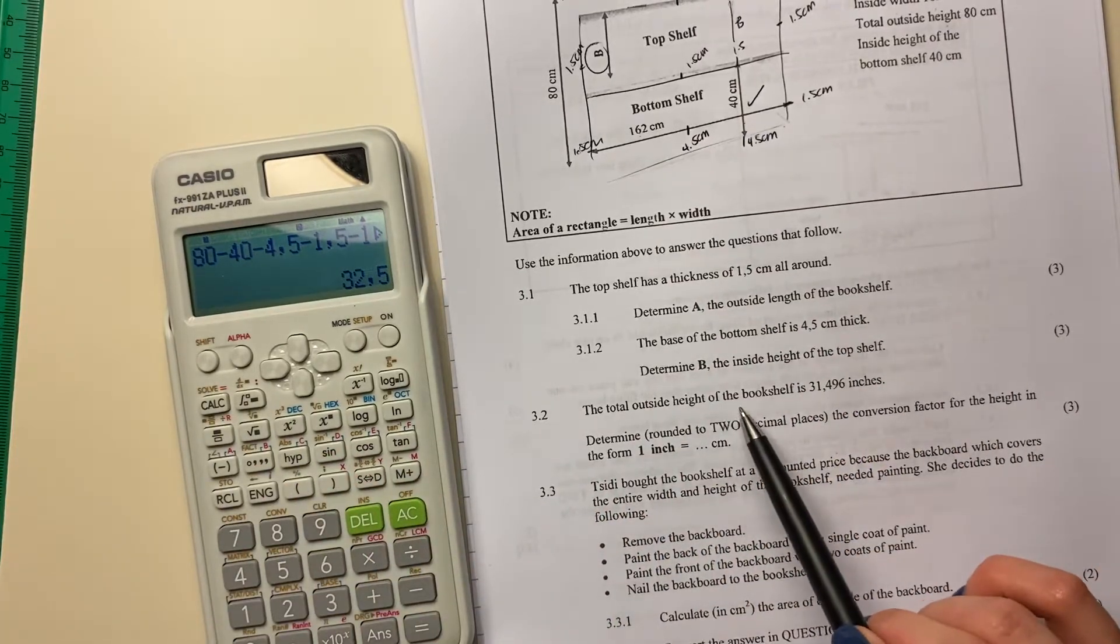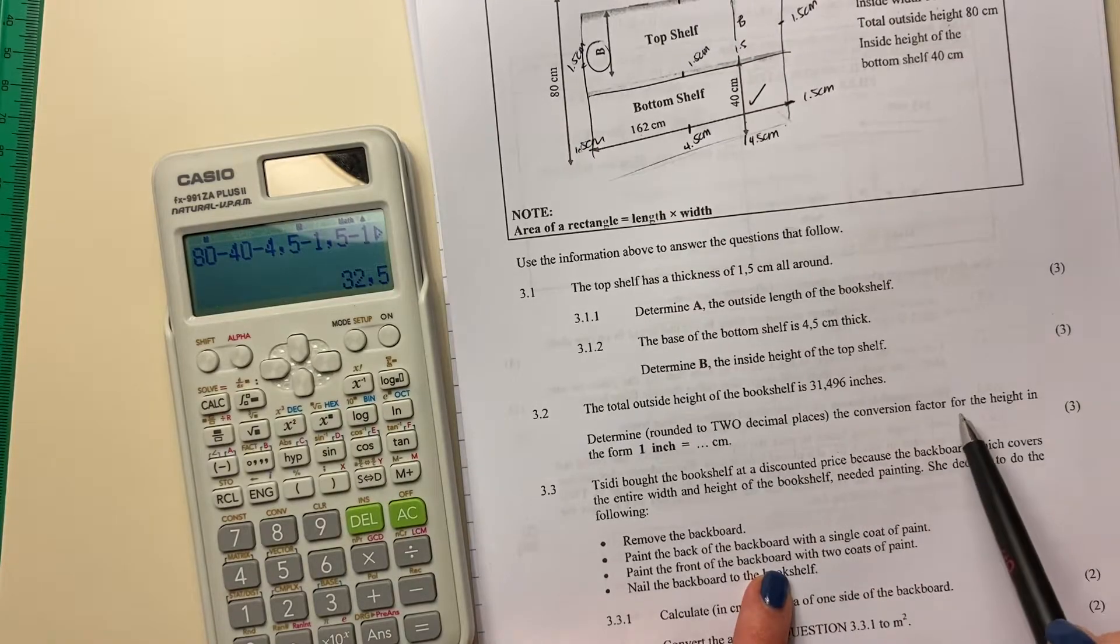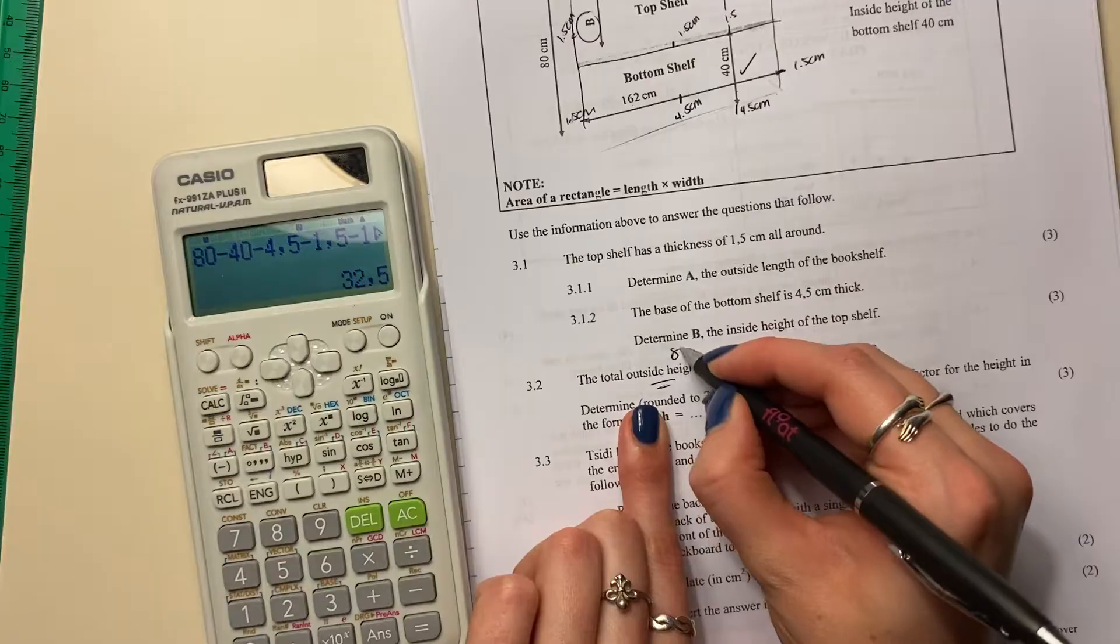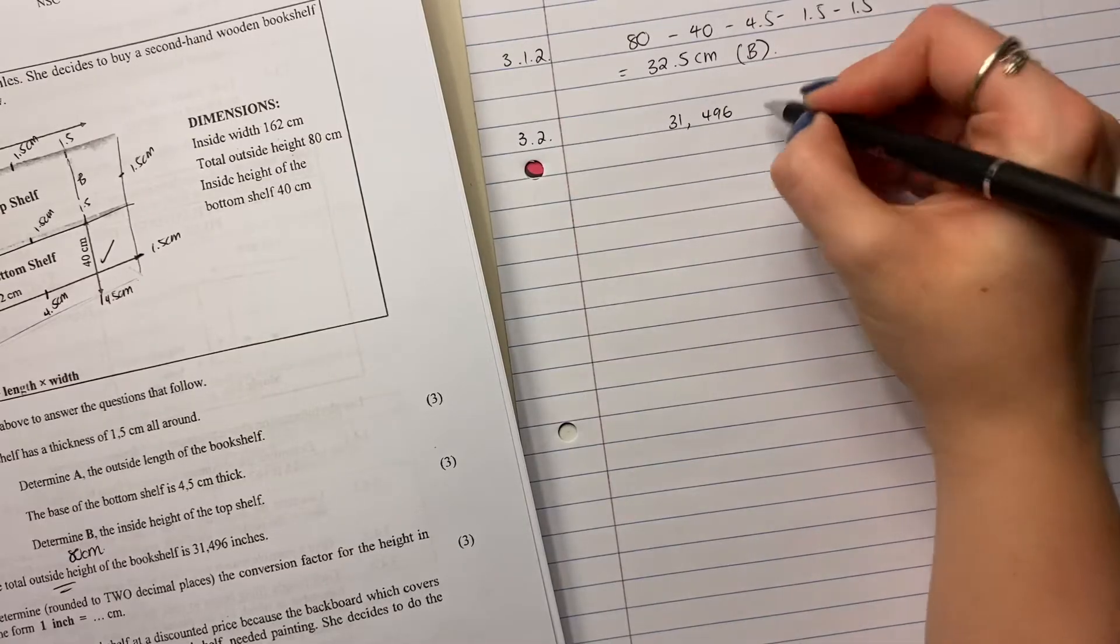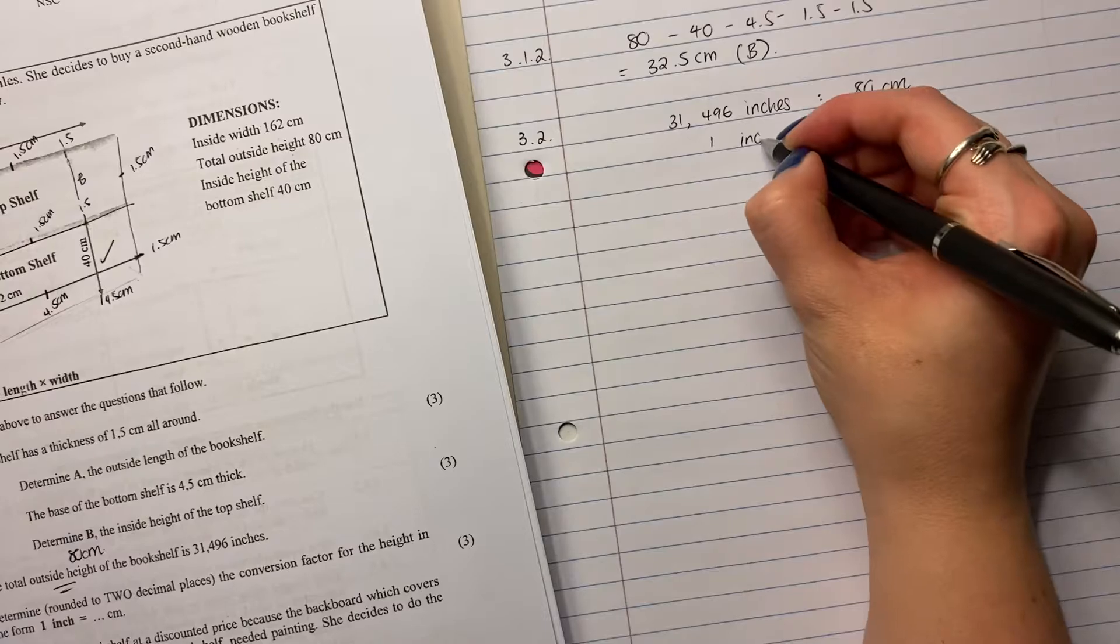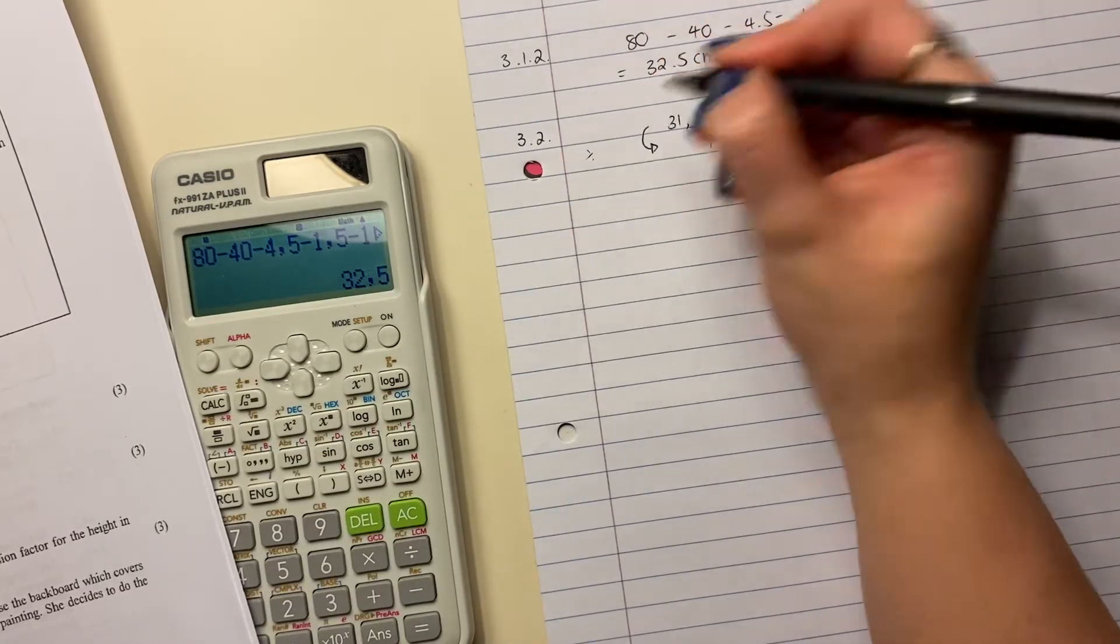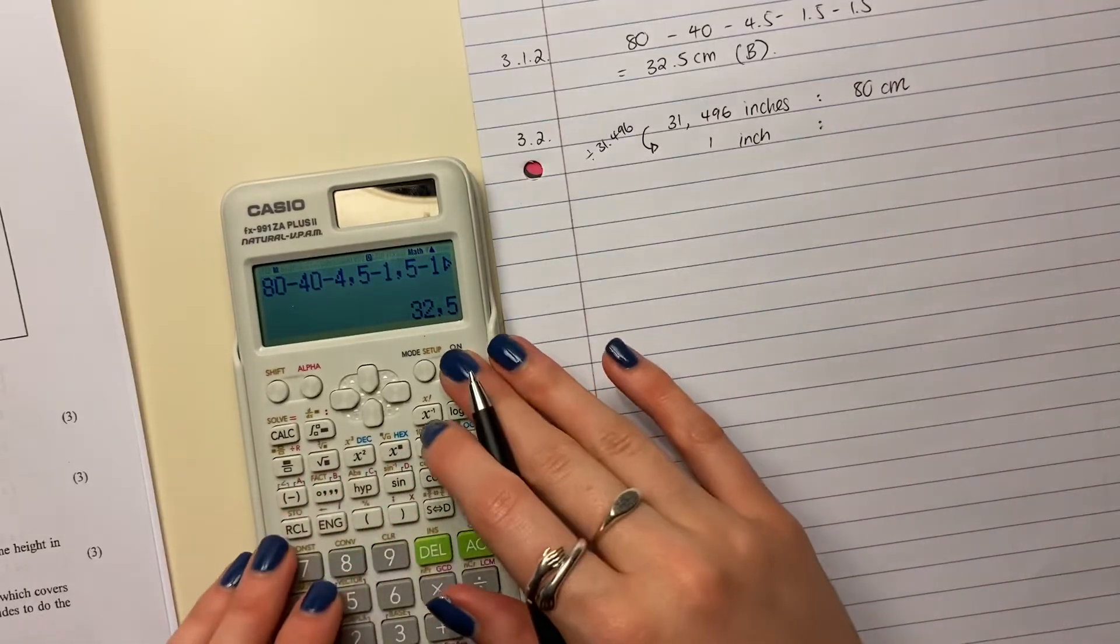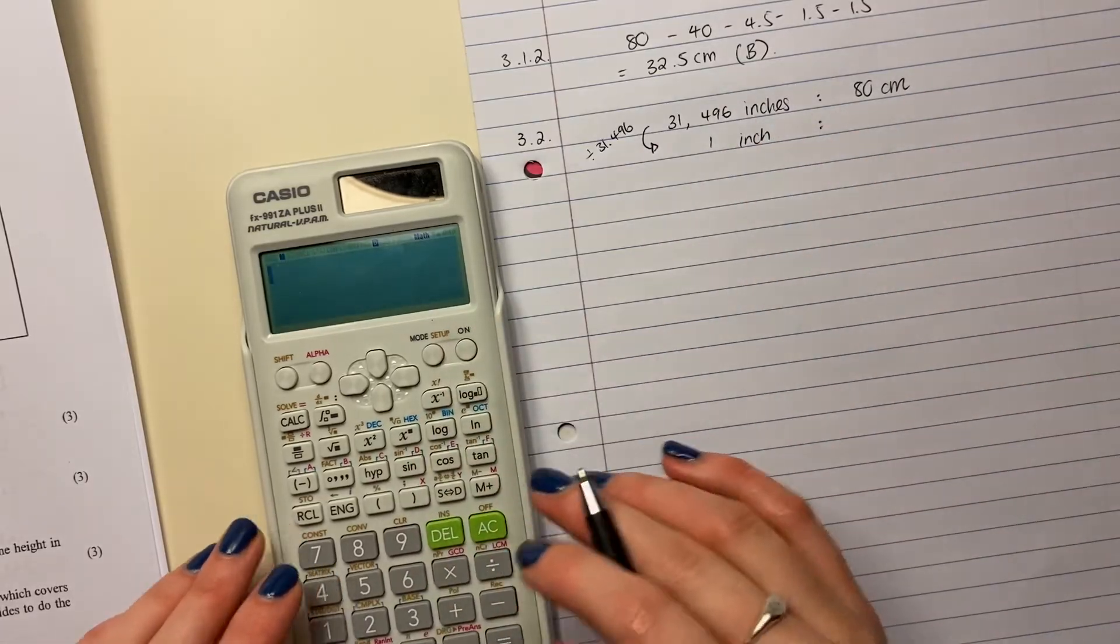Let's move on to 3.2. The total outside height of the bookshelf is 31.496 inches. Determined rounded to two decimal places, the conversion factor for the height in the form one inch equals so many centimeters. So it's saying the outside height, we know the outside height is 80 centimeters. So we know that 31.496 inches is the same as 80 centimeters. Now it wants us to make this one inch. So how do we get from that number to one? Well, we divide it by itself. Remember, that's a trick with math. If you divide anything by itself, bar zero, you get to one.